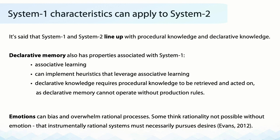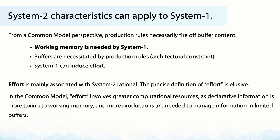In terms of System 1 characteristics that apply to System 2: it is said that System 1 and System 2 line up with procedural knowledge and declarative knowledge. And yet declarative memory has properties associated with System 1 — it can be involved in associative learning and can implement heuristics that leverage associative learning. Declarative knowledge requires procedural knowledge to be retrieved and acted on, as declarative memory cannot operate without procedural rules. Furthermore, emotional biases can overwhelm rational processes, and some think that rationality is not possible without emotion — that any instrumentally rational system must necessarily pursue desires.